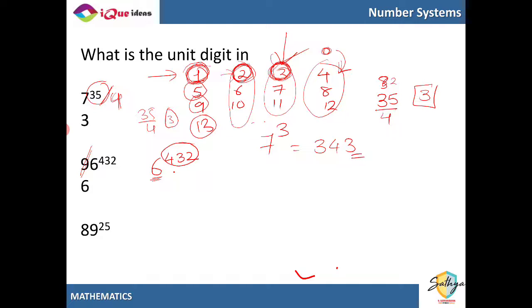89 to the power 25. So we are not concerned with 8, we equate it to 9 to the power 25. We take the power 25 and divide by 4. 4 sixes are 24. So remainder is 1. So 9 to the power 25 will have the same unit place as 9 to the power 1, which is equal to 9. So the answer to this particular question is equal to 9.